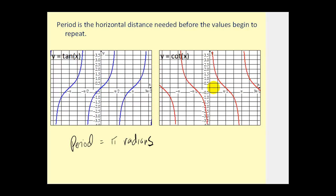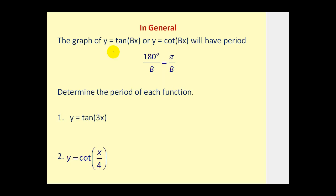Notice it's the same for cotangent — from zero to pi radians the function begins to repeat itself. So the graph of y = tan(bx) or y = cot(bx) will have a period of pi radians divided by b, or in degrees, 180 degrees divided by b.